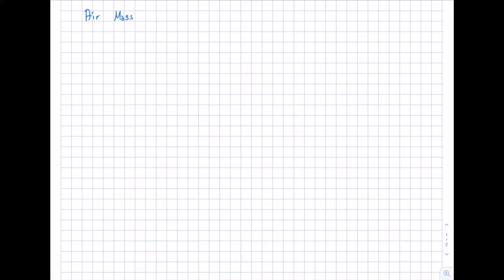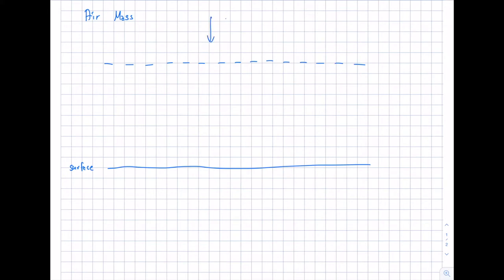In the last video we talked about the solar spectrum, and now we'll look at what the solar radiation on Earth's surface is and introduce the air mass as the value representing the solar spectrum on the surface. The solar radiation has a specific power — the solar constant — of 1361 watts per square meter.